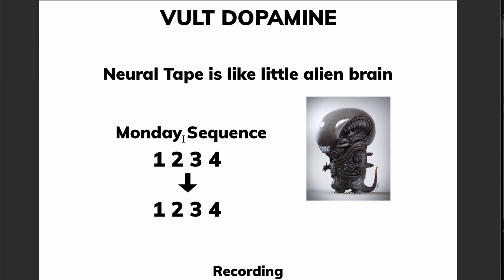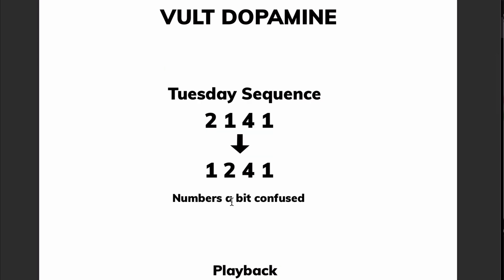Let's say we take that alien and start teaching it numbers in the sequence one, two, three, four. Then we tell the alien to repeat back what we just told it. Since its brain is totally new, it will tell us back one, two, three, four. Next day on Tuesday we change the sequence to two, one, four, one. Since its memory is a little confused, it starts mixing things up - it may tell us for example one, two, four, one - mixing elements of both the Monday and Tuesday sequences.